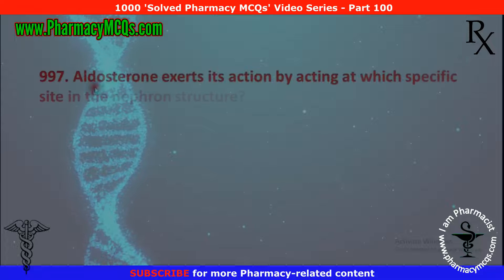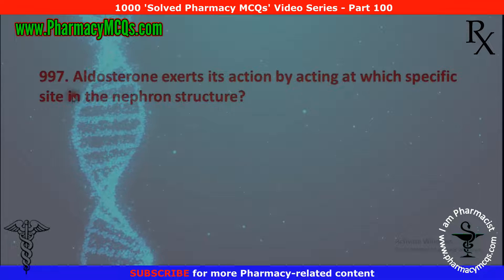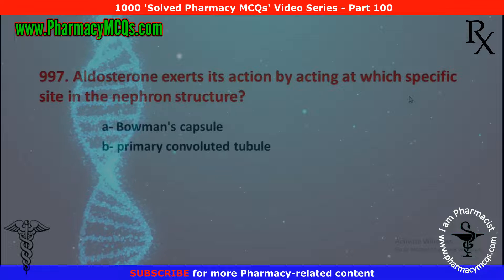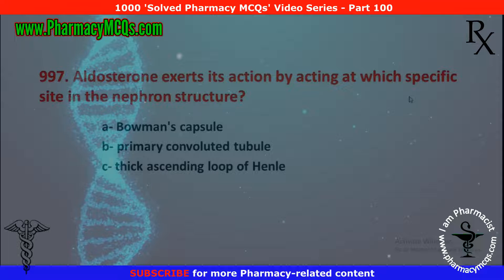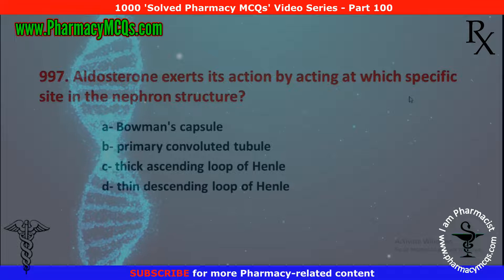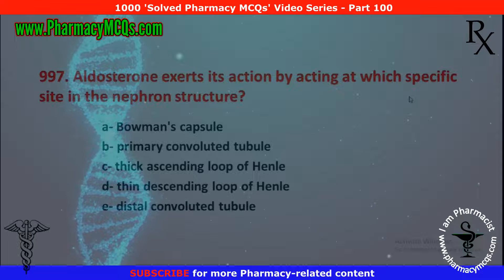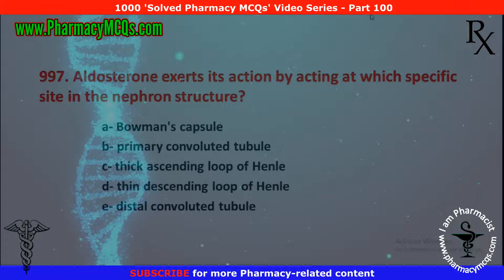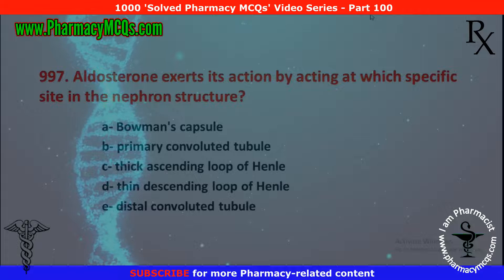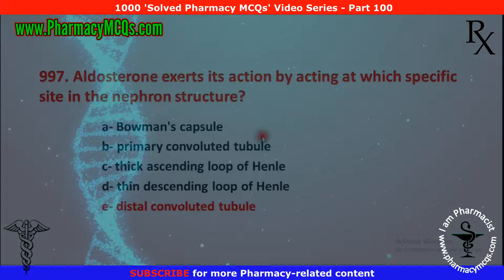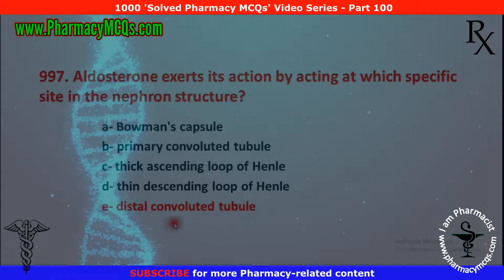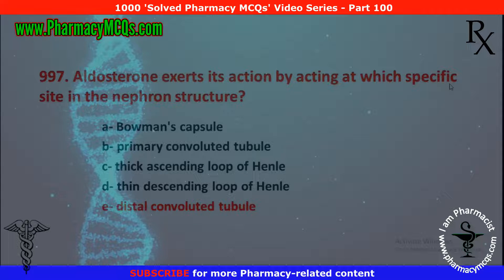Next MCQ: aldosterone exerts its action by acting at which specific site in the nephron structure? Options are: Bowman's capsule, proximal convoluted tubule, thick ascending loop of Henle, thin descending loop of Henle, and distal convoluted tubule. Aldosterone exerts its action by acting at the distal convoluted tubule in the nephron. So option E is correct.